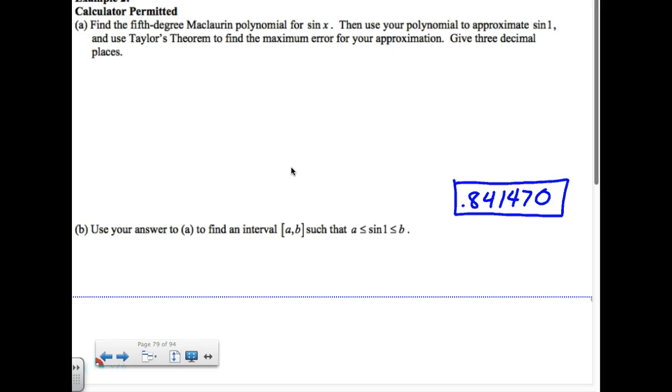So first of all, we're going to start this off. It says fifth degree Maclaurin polynomial for sine x. So my sine x, I'm going to approximate with a fifth degree polynomial centered at what? Zero, because of the Maclaurin. So I know I'm doing C equals zero. I know my x is going to eventually be one.